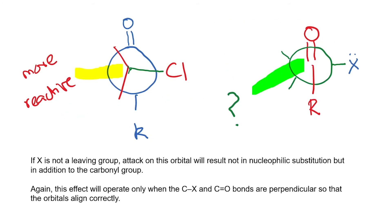Now, if I have a compound where X is an electronegative atom that does not leave — X is not a leaving group — how does this influence the reactivity of the carbonyl? Whatever we proposed that increases the rate of substitution at this carbon will also have an impact on the reactivity of the carbonyl. When X is not a leaving group, there is still going to be a combination of sigma star and pi star orbitals, but instead of activating the carbon-chlorine bond, it is going to activate the carbonyl carbon towards nucleophilic substitution.